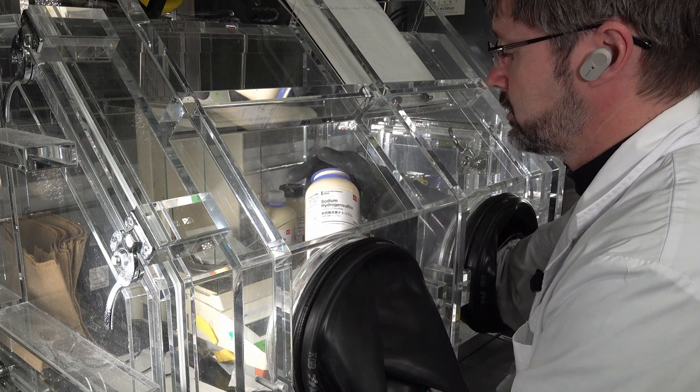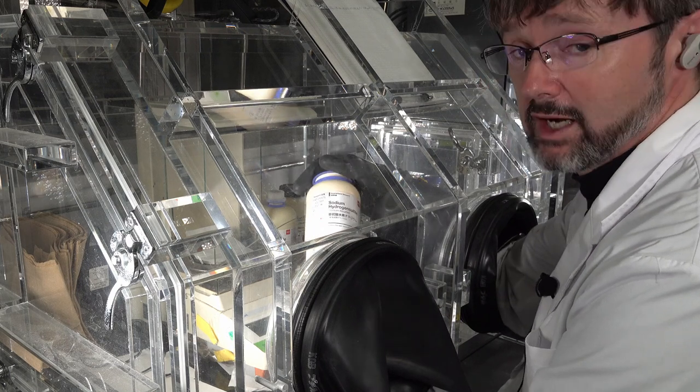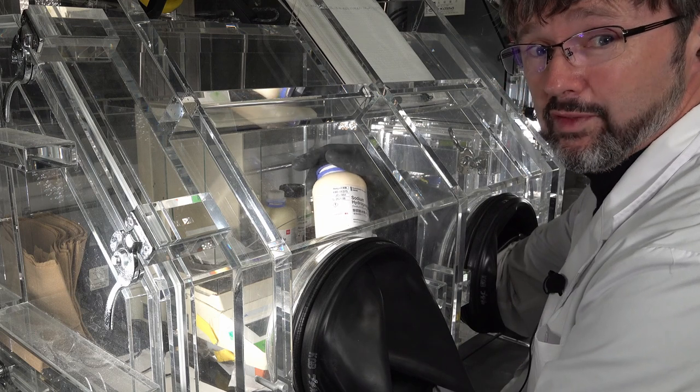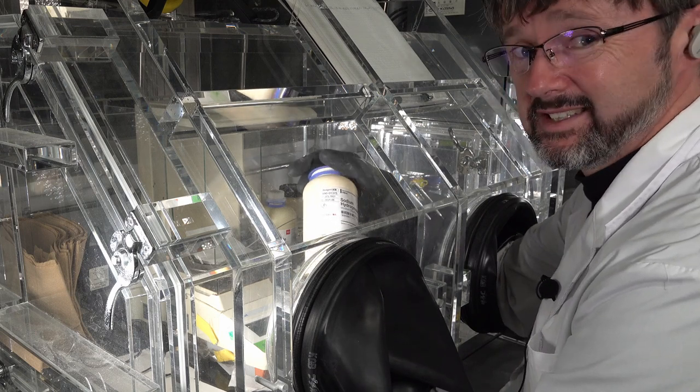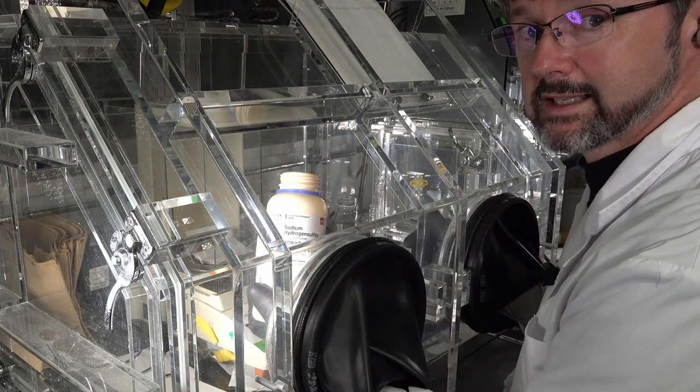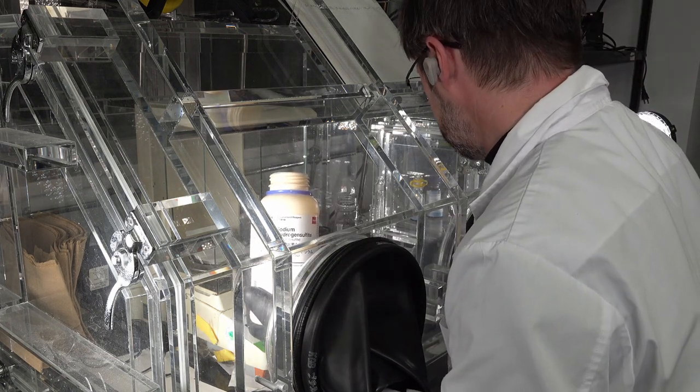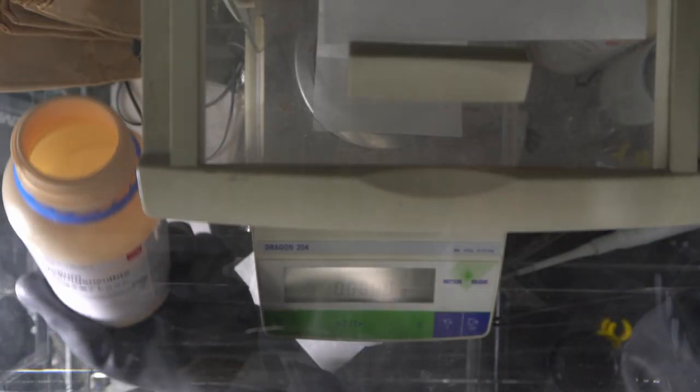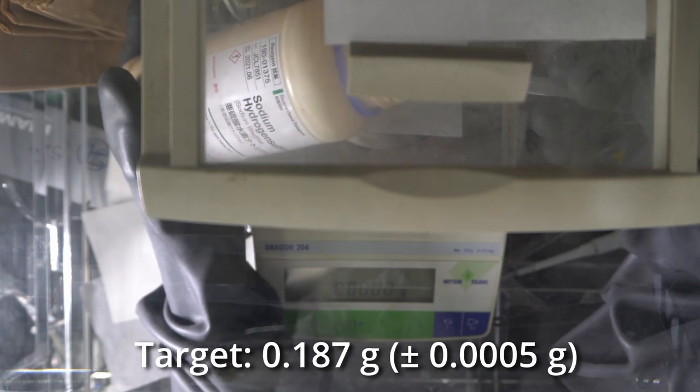I'm gonna weigh out the sodium sulfite - sorry, the sodium hydrogen sulfite first - because it's the easiest one. There's more of it, which makes it easier to weigh out. 0.187 grams. That's my three significant figures there.